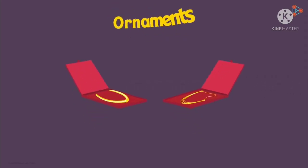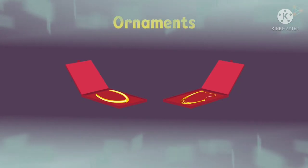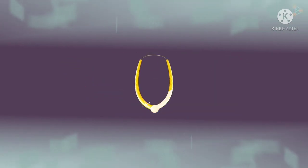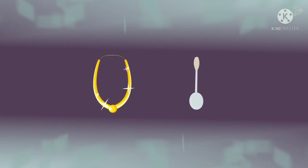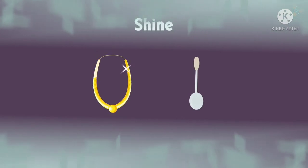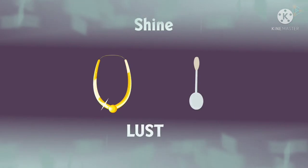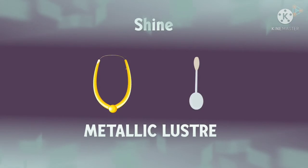Let us take for example ornaments — any of the ornaments will do. You will observe that most of them are made up of gold or silver. Do they have a shining surface? Or even the aluminium utensil in the kitchen — does it shine? Of course, both gold and aluminium have a certain shine. Do you know what this shine is called? It is called luster, and as both gold and aluminium are metals, this is known as metallic luster. Now we know that metals have a metallic luster.